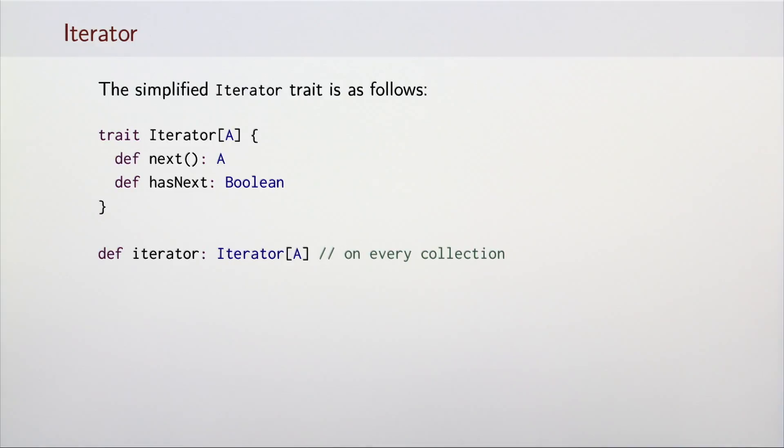Each iterable collection can create its own iterator object. In Scala, every iterator comes with two methods, next and hasNext. The iterator maintains some internal state that describes what the current element is. Calling next moves the iterator to the next element and returns it, while calling hasNext returns true only if there are more elements to traverse.